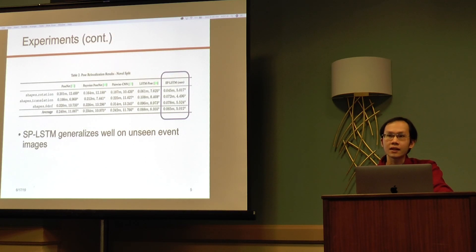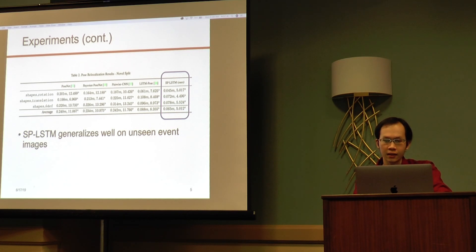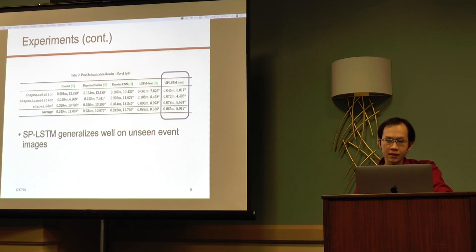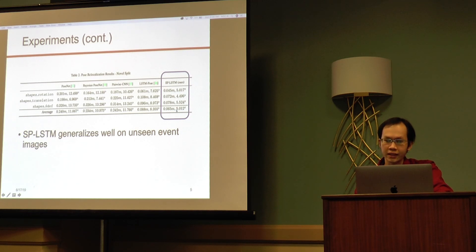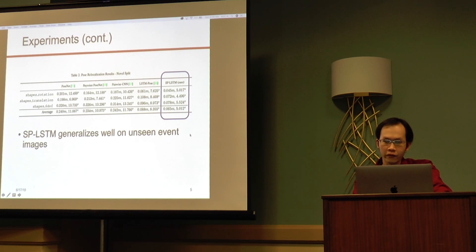To demonstrate the generalization ability of our SP LSTM network, we also conduct experiments using a novel split strategy. In particular, from the original event image sequence, we select the first 70% of images for training and the remaining 30% for testing, giving two independent sequences on the same scene. This table summarizes the median and average error on three sequences using the novel split strategy. The extensive experimental results from both the random split and novel split show that our SP LSTM successfully relocalizes the event camera pose using only the event image.